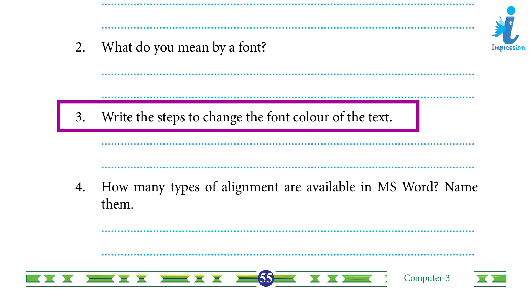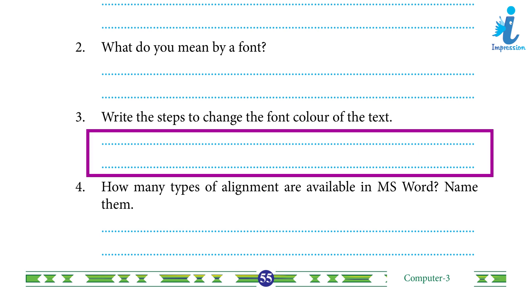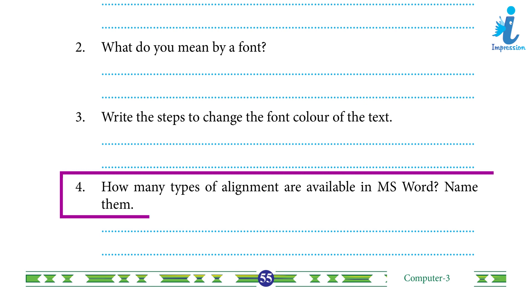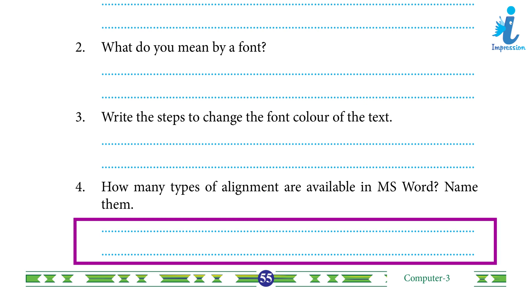3. Steps to change the font color of the text: 1. Select the text whose color you want to change. 2. On the Home tab, click the font color drop-down arrow — the font color menu appears. 3. With the help of the mouse, select the font color you want to use. 4. Select More Colors at the bottom of the menu to access the color dialog box, choose the color you want, then click OK. 4. There are four alignments in MS Word: Left Align, Center Align, Right Align, and Justify Align.